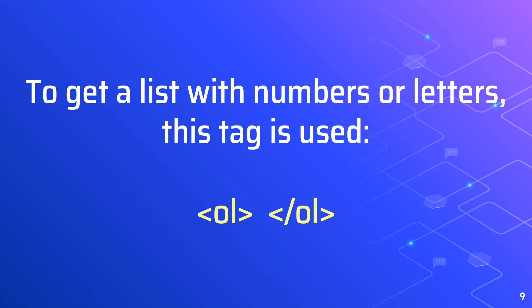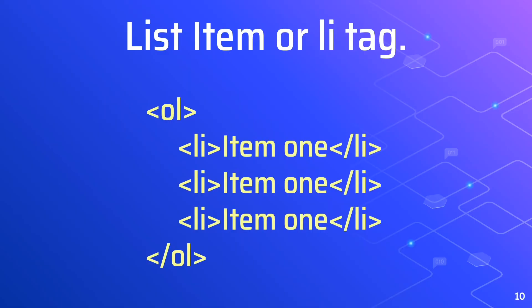But those two tags won't get you a list. You need to include another tag — the LI tag. LI stands for list item. You need one pair of LI tags for every item in your list.